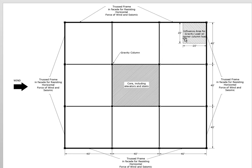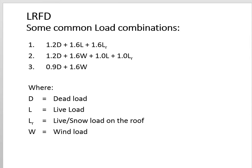This is the influence area for the gravity loads that are going to get transferred to this column. The influence area goes halfway to the next column in each direction. We're going to assume steel beams with a concrete slab floor. There's a core here which we don't have to worry about for now because we're focusing on the corner columns taking compression from gravity and also compression from the overturning moment. The loads we're going to consider are 1.2 times dead plus 1.6 times live, and then 1.2 times dead plus 1.6 times wind.